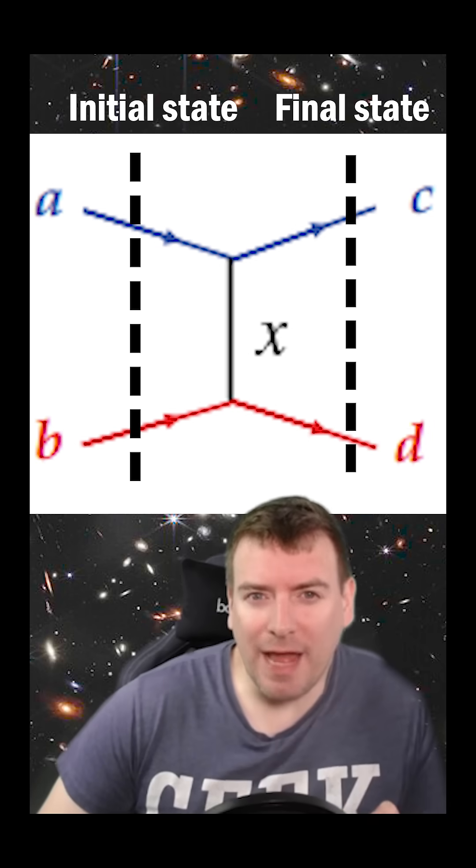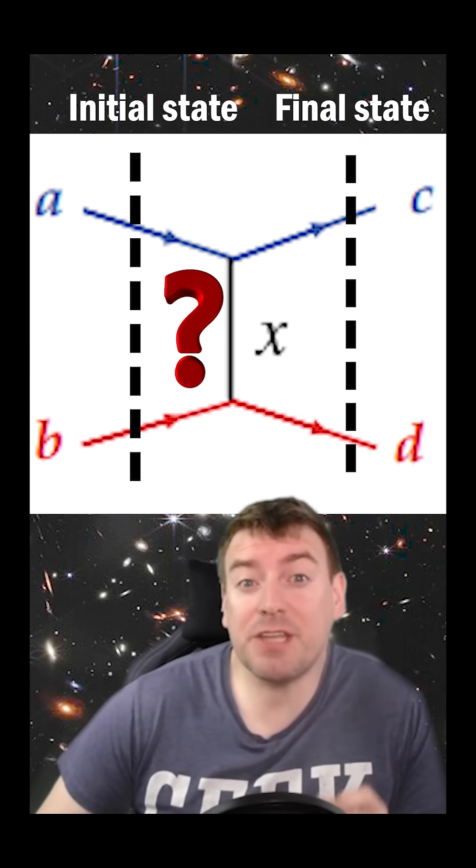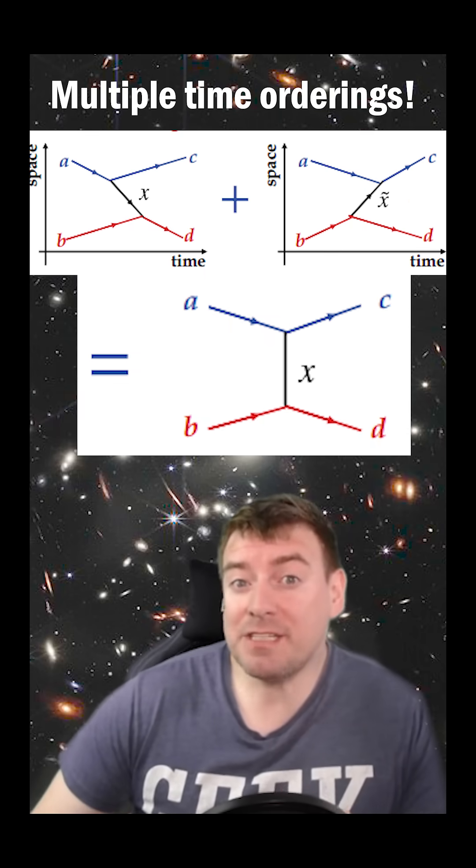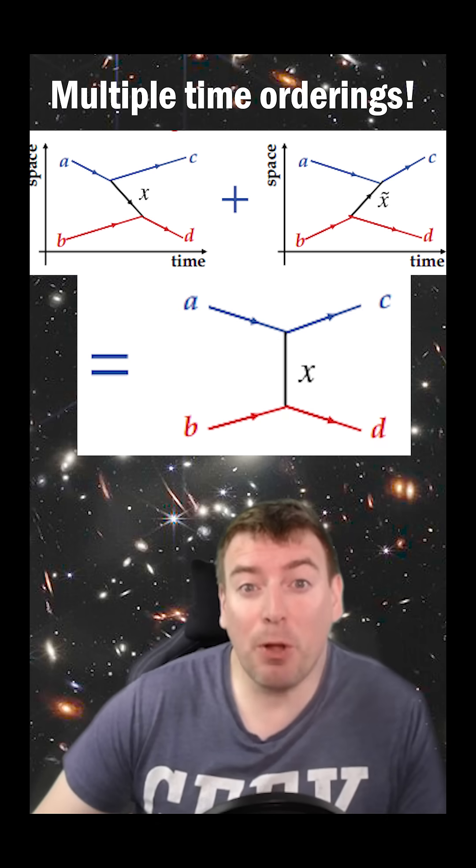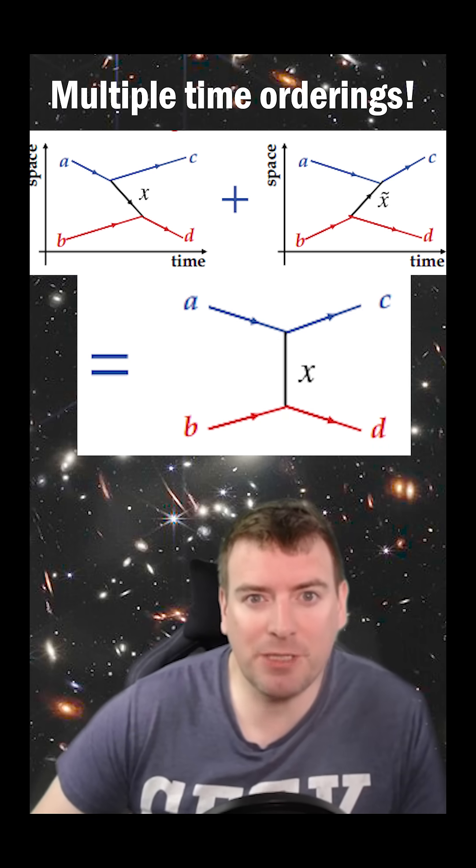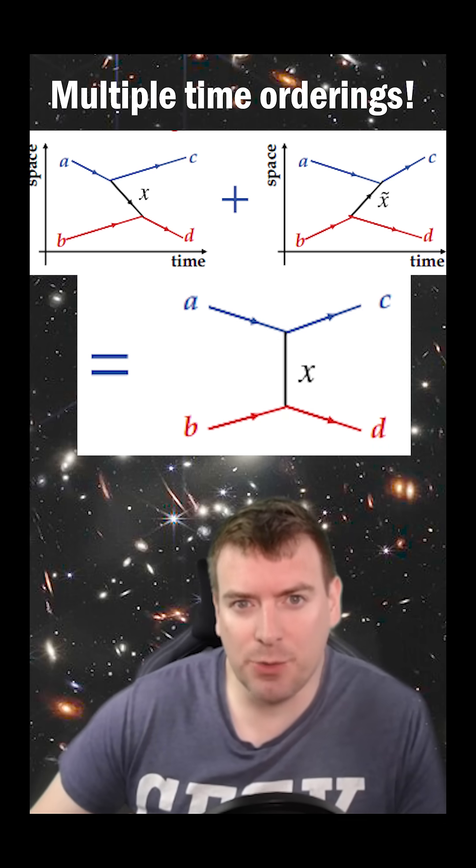But if time is running to the right, how can there be particle lines that are totally vertical? The answer is that a Feynman diagram represents multiple time orderings of the same process that are equally likely to occur.